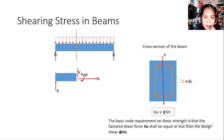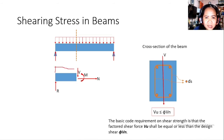The internal forces exposed at the cut section include shear and moment. The stirrups in the cross-section are what resist the shear stress.